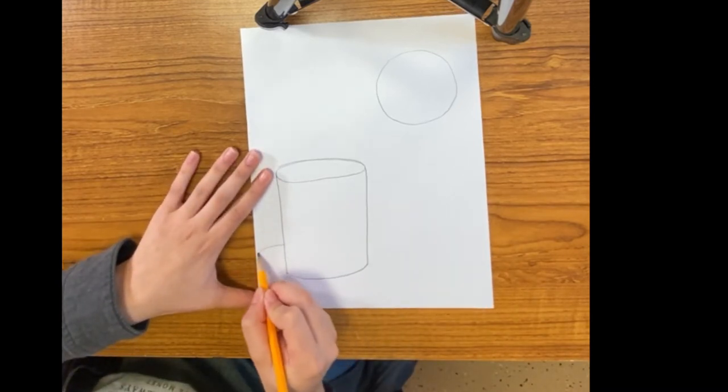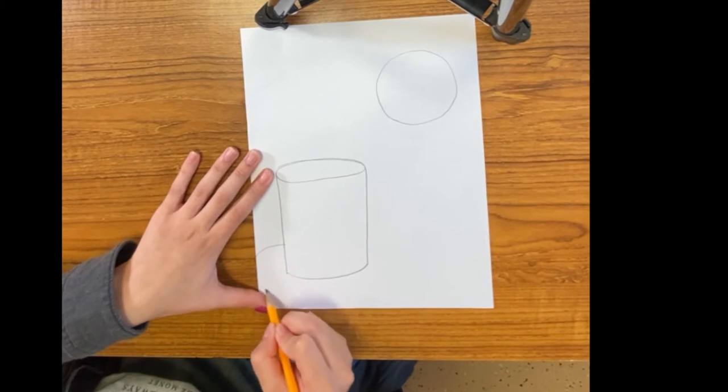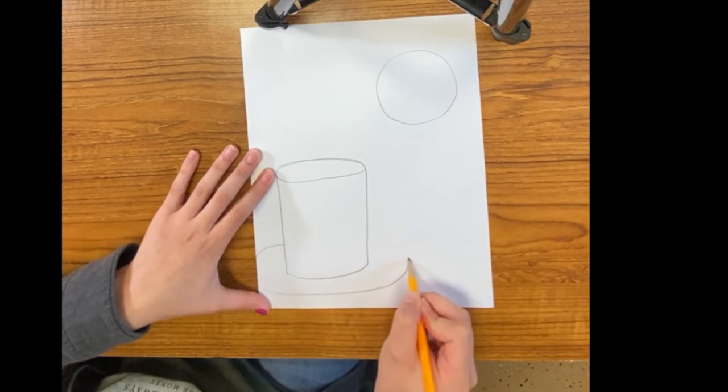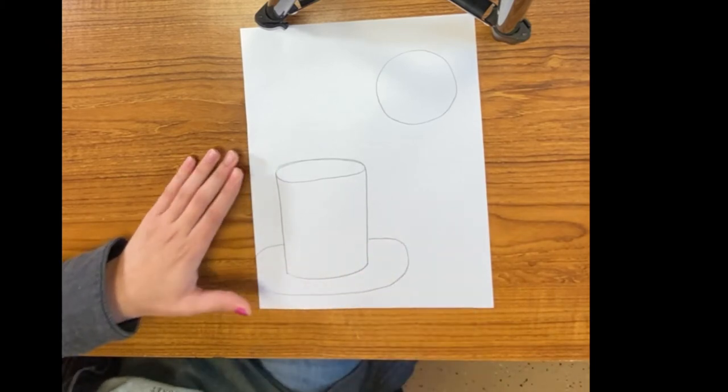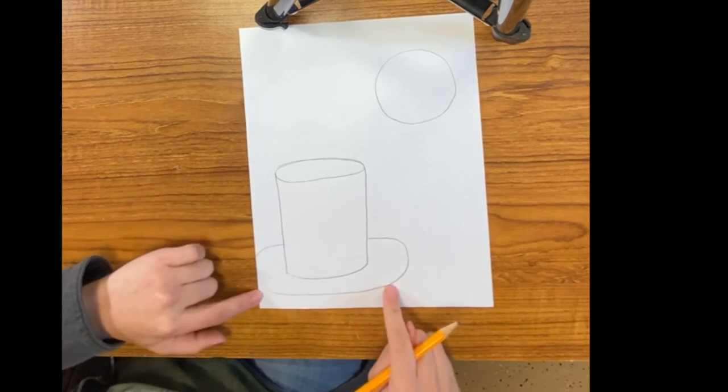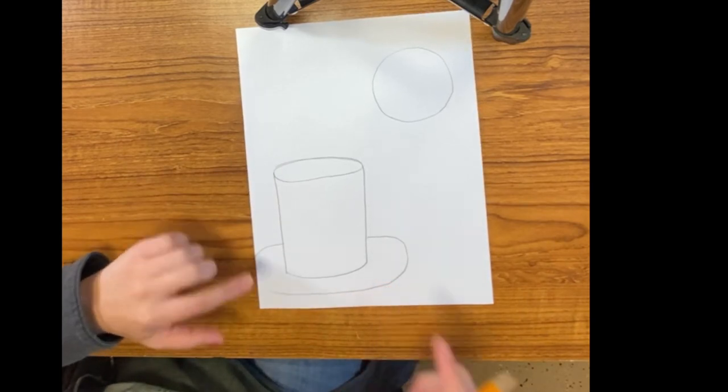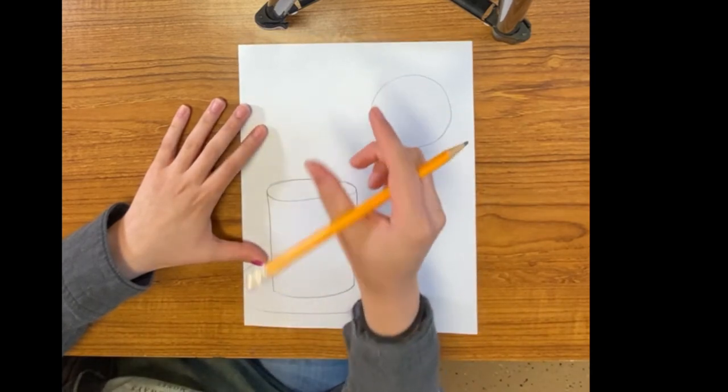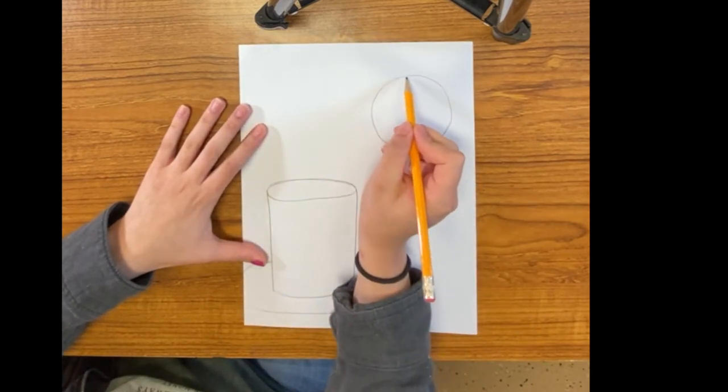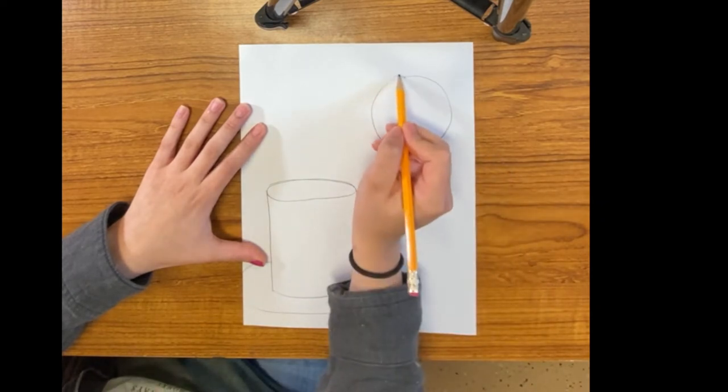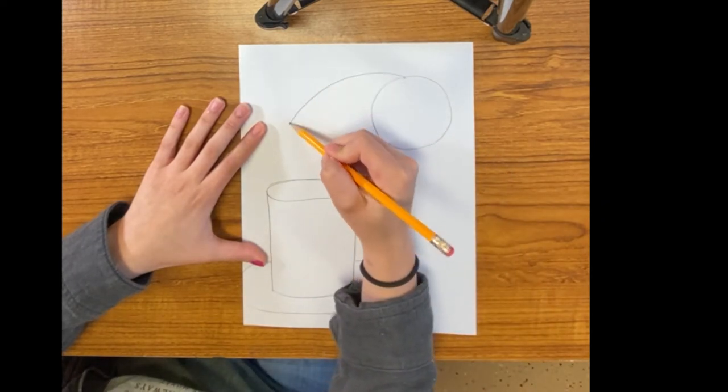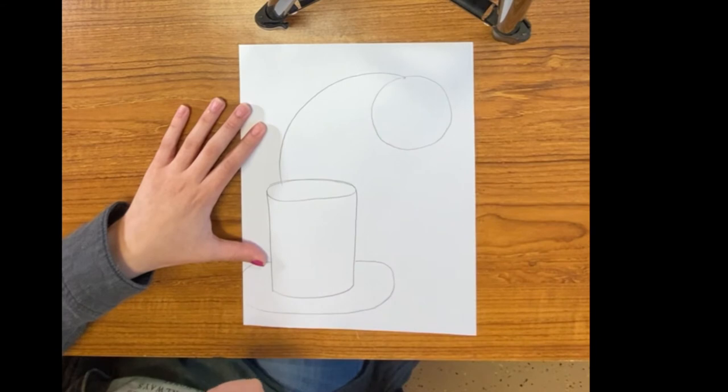Next is we're going to create the table. Again, keep in mind, these shapes don't have to be perfect. That's the table, the table top. Now we're going to come back up here to this part of the cat. We're going to make a line that curves all the way down, just like that.